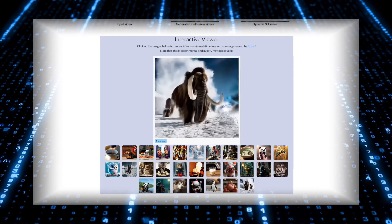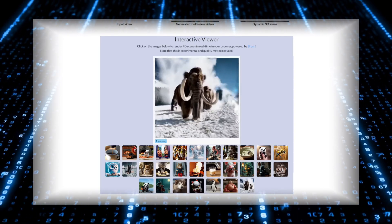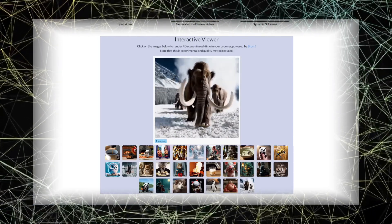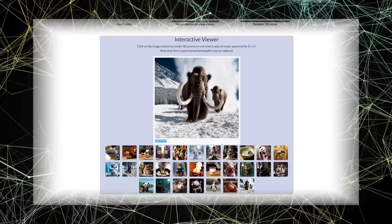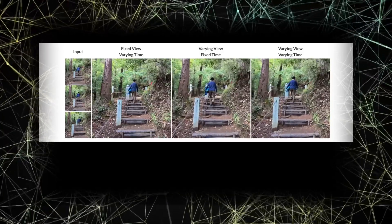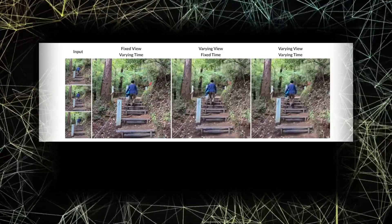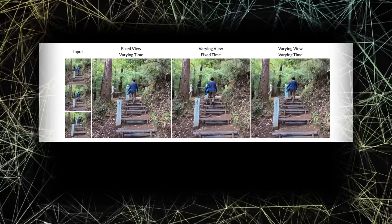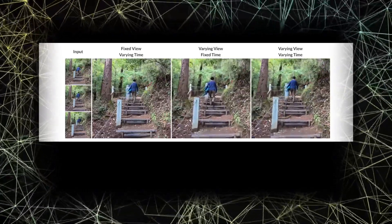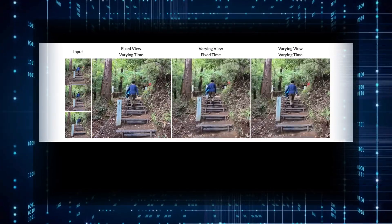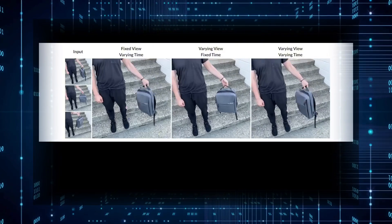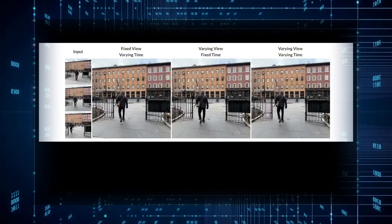Despite some flaws with extreme camera angles, it's still amazing that the AI can predict an entire 3D scene from a single video. It doesn't just work with videos either — you can also input a sequence of images. Feed it three frames of someone walking upstairs, and Cat4D can generate a 4D video from that. You can tweak settings like the view or time, fix the camera angle and watch the subject move, freeze time and move the camera around a static scene, or have both the view and time change for a dynamic 4D experience.